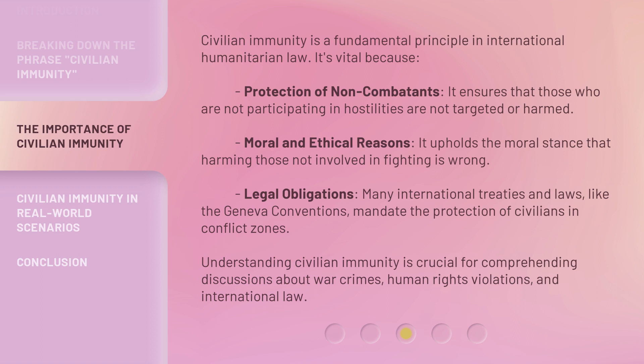Civilian immunity is a fundamental principle in international humanitarian law. It's vital for several reasons. Protection of non-combatants: it ensures that those who are not participating in hostilities are not targeted or harmed. Moral and ethical reasons: it upholds the moral stance that harming those not involved in fighting is wrong. Legal obligations: many international treaties and laws, like the Geneva Conventions, mandate the protection of civilians in conflict zones. Understanding civilian immunity is crucial for comprehending discussions about war crimes, human rights violations, and international law.